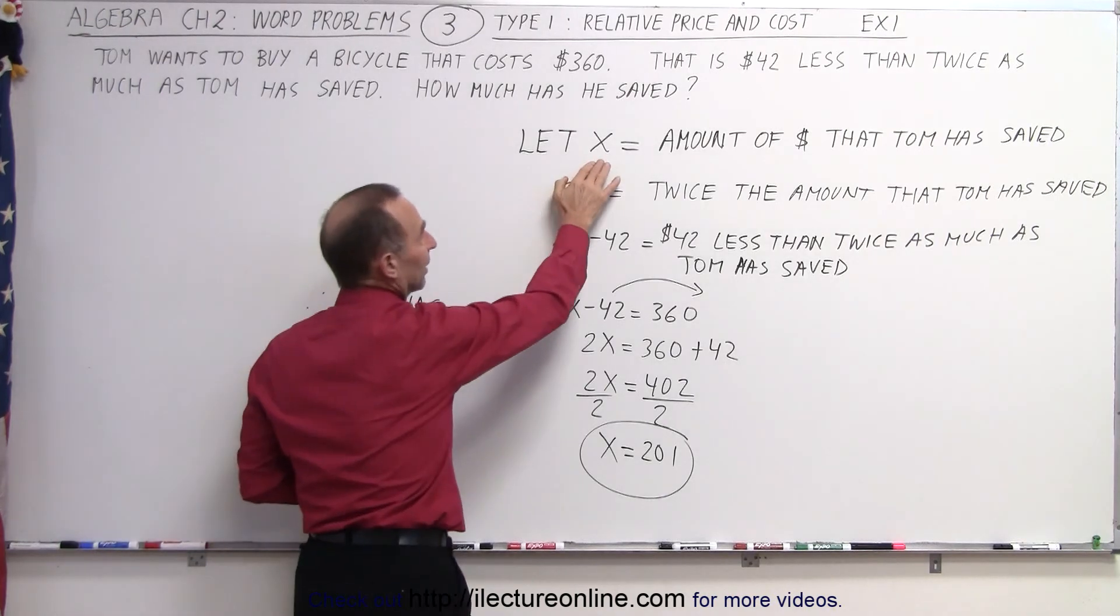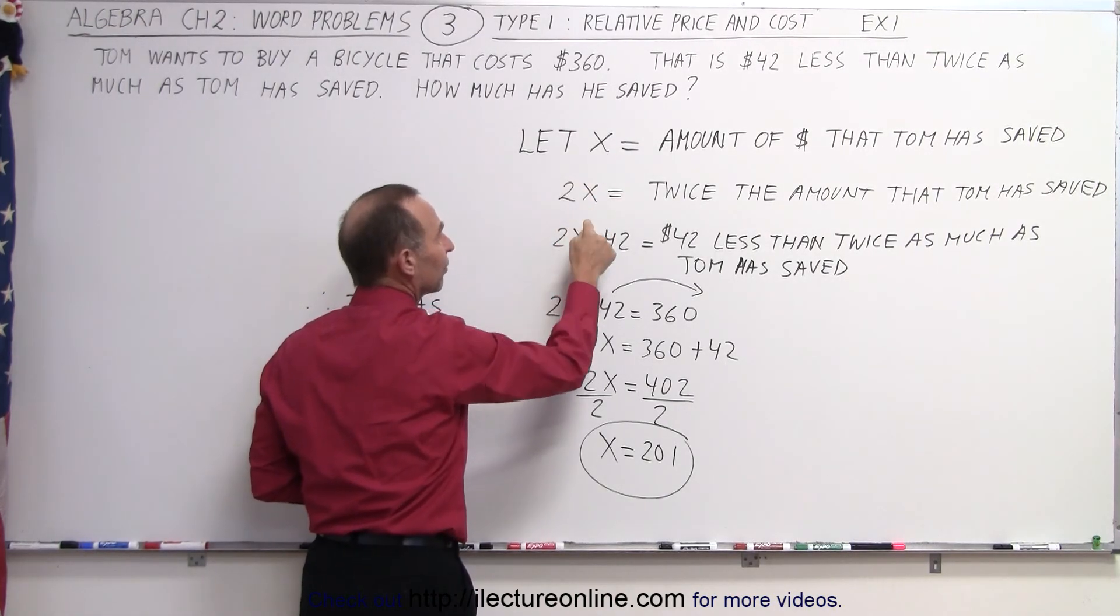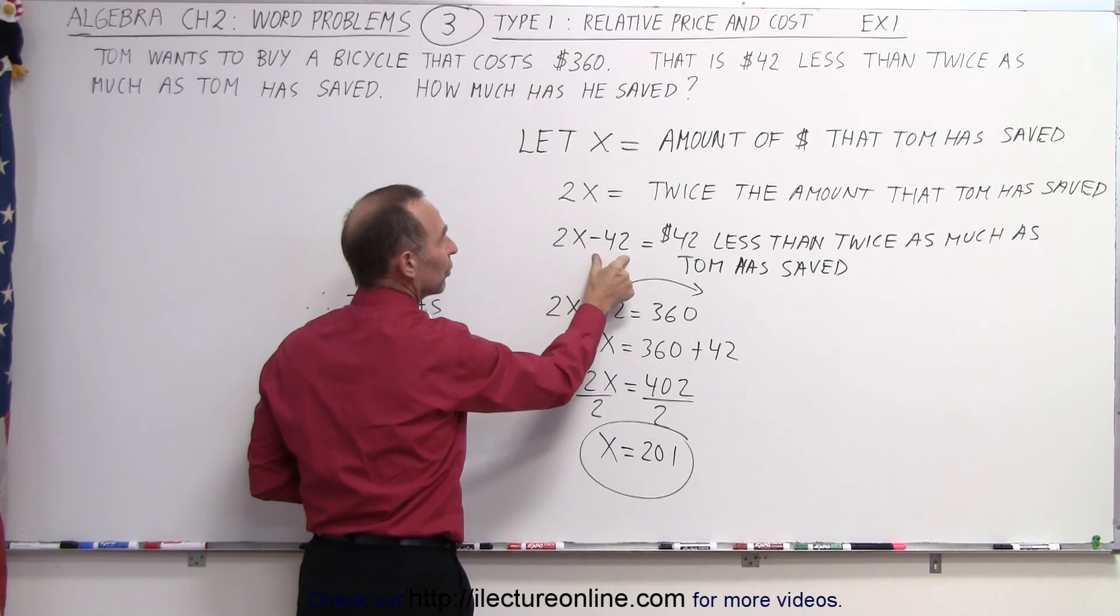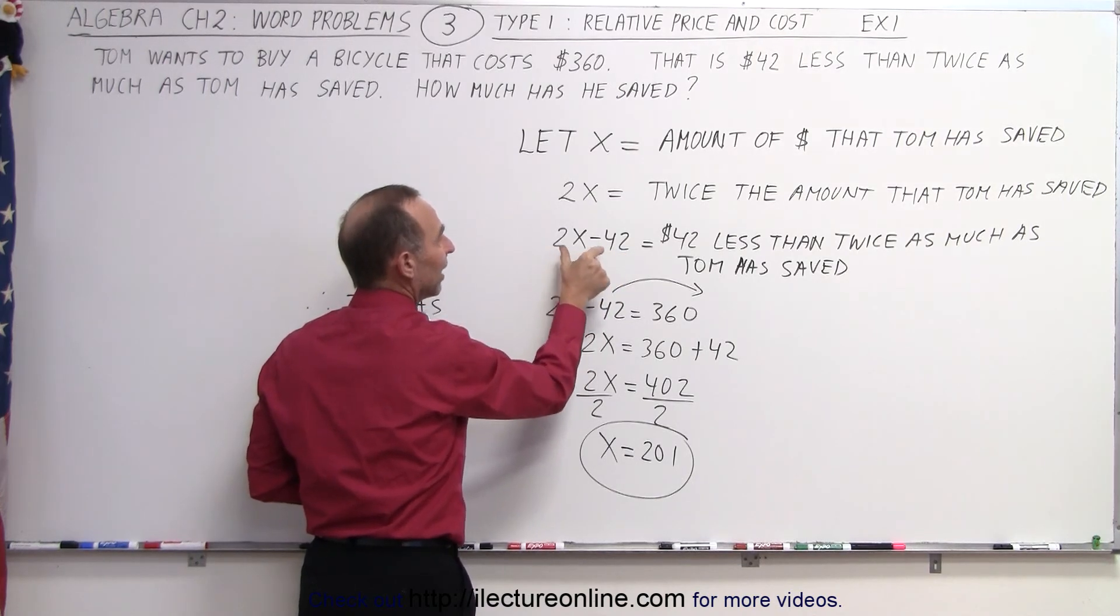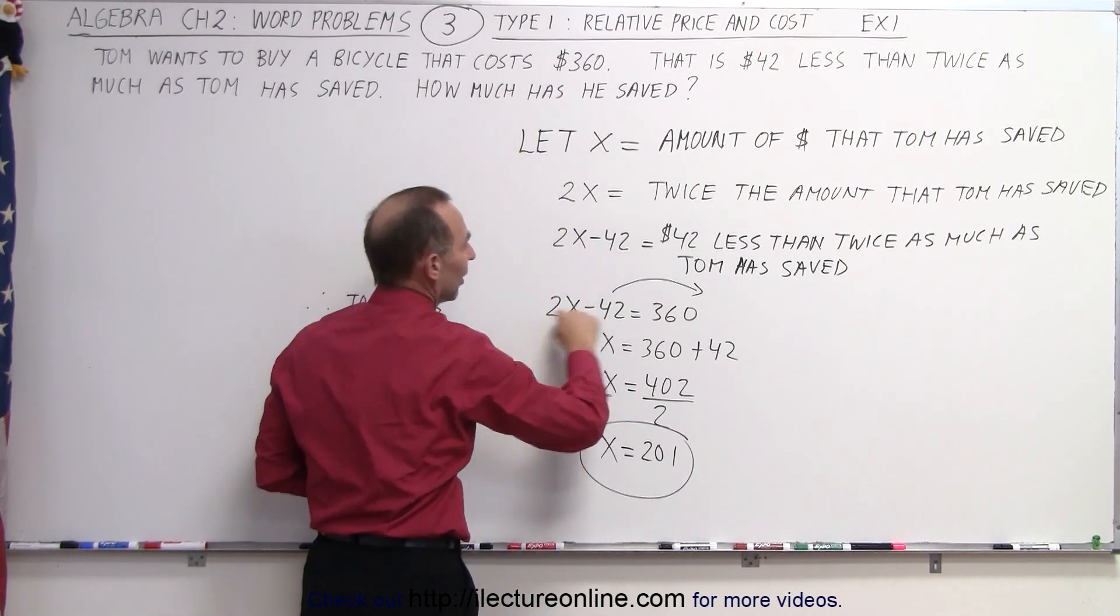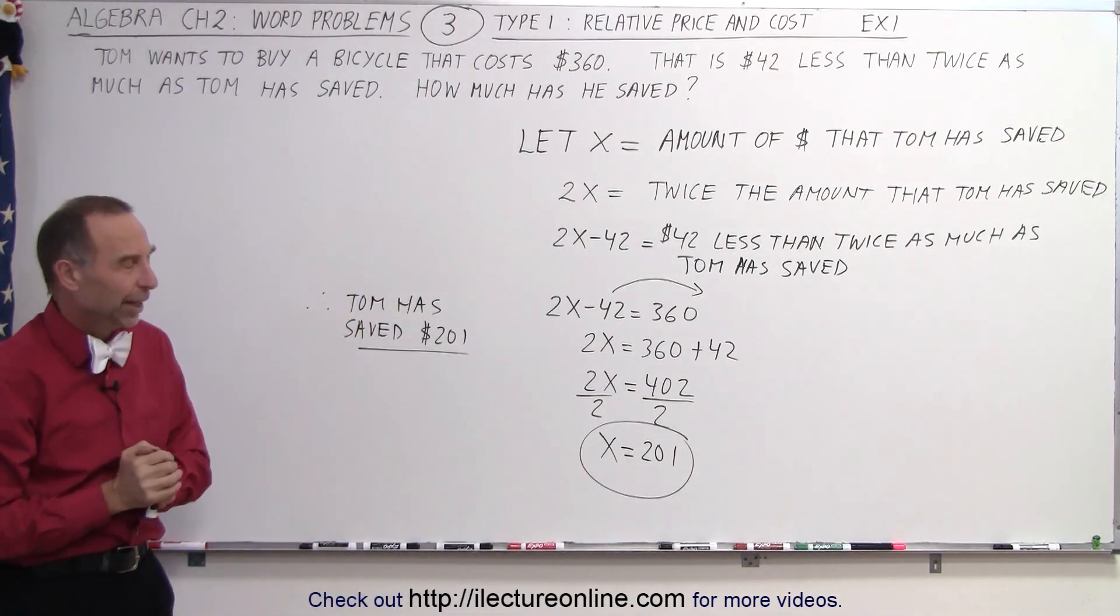Express X as the amount he has saved. 2X is twice as much as he has saved. Subtract 42, that's $42 less than twice as much as he has saved. And then you set that equal to the price, because then you can solve for X. And that's how we do that. Thank you again.